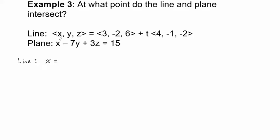My x component here is going to be the first component of this vector plus t times the first component of this vector. So 3 plus 4t.